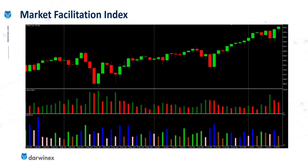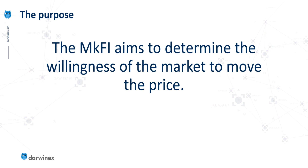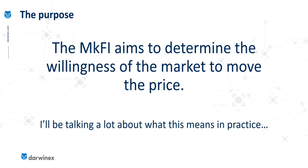Here we've got a representation of what that looks like. You can see the Market Facilitation Index at the bottom, and as you can see it has four possible colors: green, pink, blue, and brown. If you had to sum up what this indicator tells you, it aims to determine the willingness of the market to move the price — in other words, the willingness of trader participation to force those meaningful directional moves.